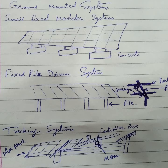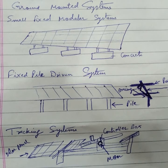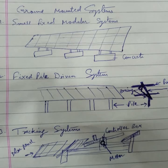Then second is the fixed pile driven systems. In that, piles are there, so it is also a ground mounted system. Then third one is a tracking system. In that, it is also ground mounted and single axis and dual axis tracking is there, and a controller box is also there. So this is about the ground mounting systems.